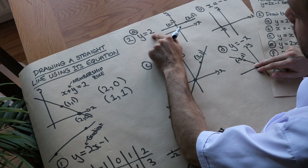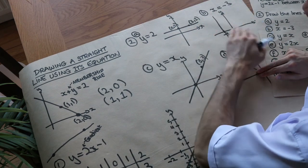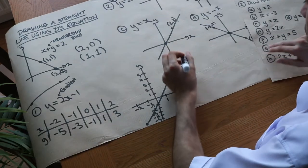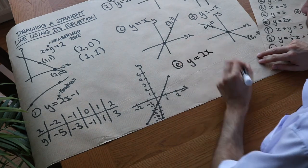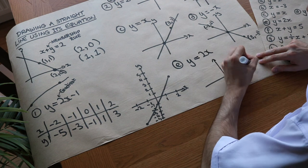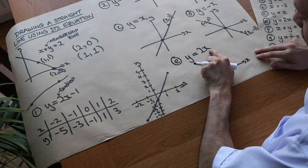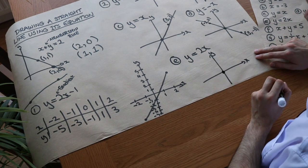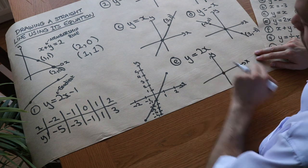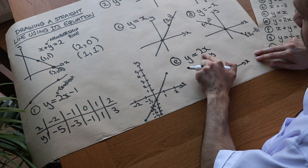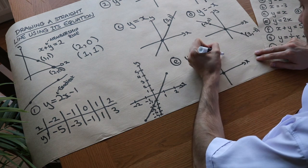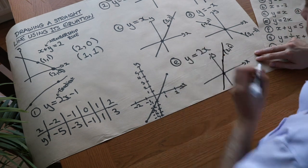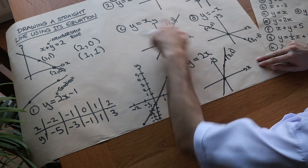If you ever see y equals a constant, or x equals a number, you should be able to sketch it outright. Now we've got y = 2x. If x is 0, 2 times 0 is 0, so y = 0 — it goes through (0, 0). If x is 3, y is 2 times 3 = 6, so we plot (3, 6). It's going to go through the origin and be a bit steeper than y equals x.